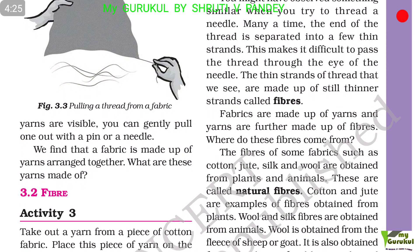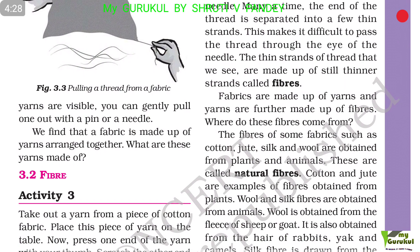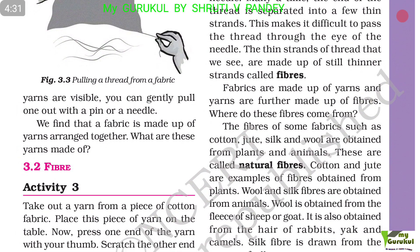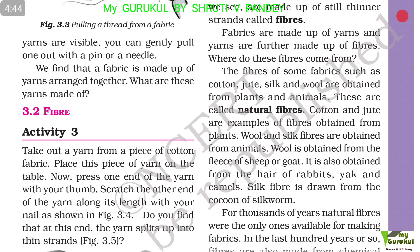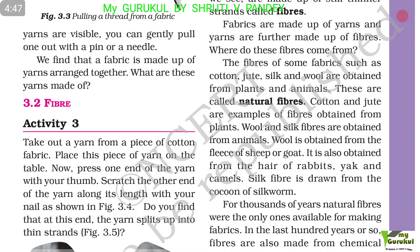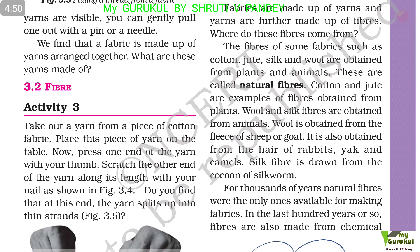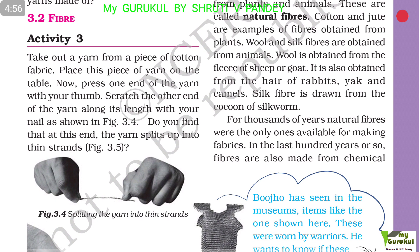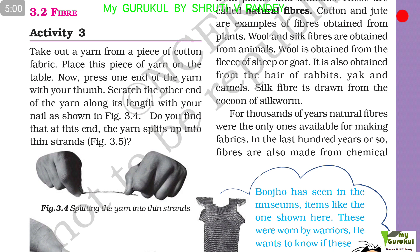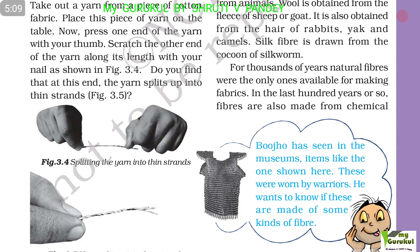Where do these fibers come from? The fibers of some fabrics such as cotton, jute, silk, and wool are obtained from plants and animals — these are called natural fibers. Cotton and jute are examples of fibers obtained from plants. Wool and silk fibers are obtained from animals. Wool is obtained from the fleece of sheep or goat, and also from the hair of rabbits, yak, and camels.